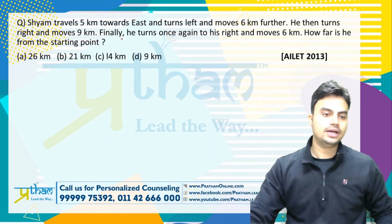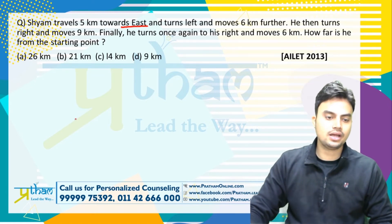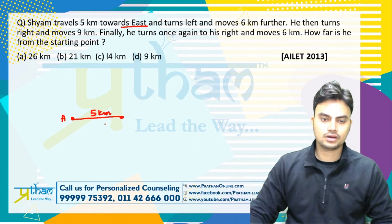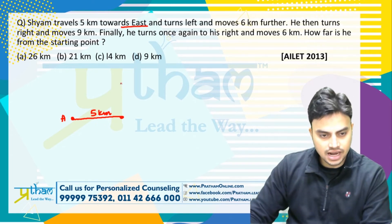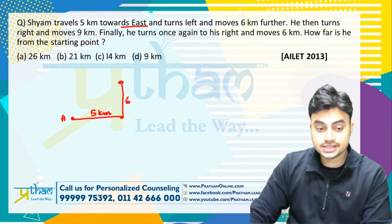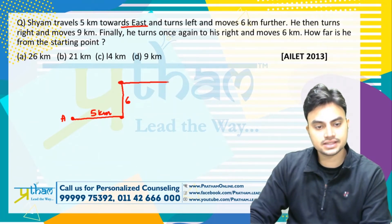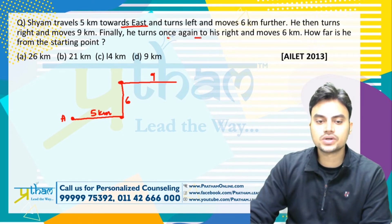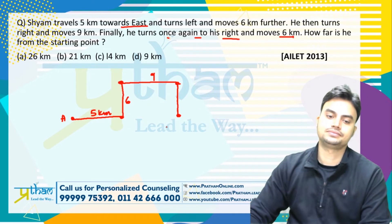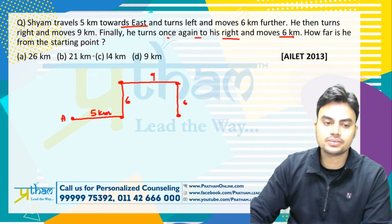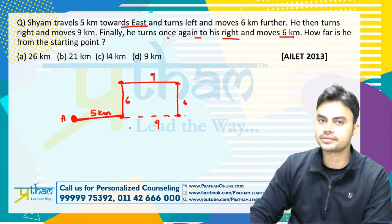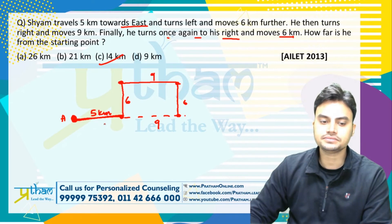LIKE 2013 question: Kisham travels 5 kilometers east, turns left and moves 6 kilometers further, then turns right and moves 9 kilometers, and finally turns right and moves 6 kilometers. How far is he from the starting point? The 6 km north and 6 km south cancel out. Total east distance = 5 + 9 = 14 km. Answer is 14 kilometers.